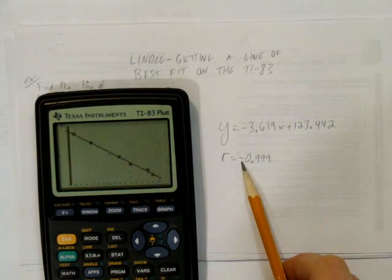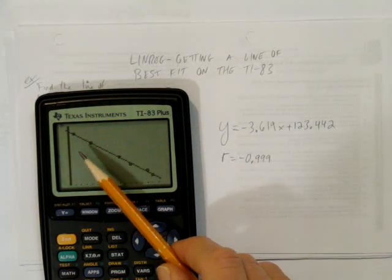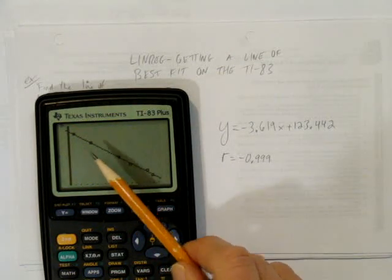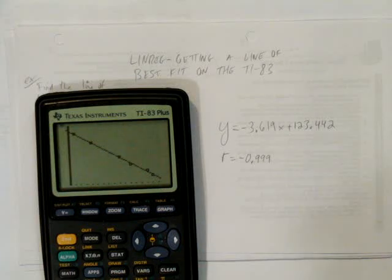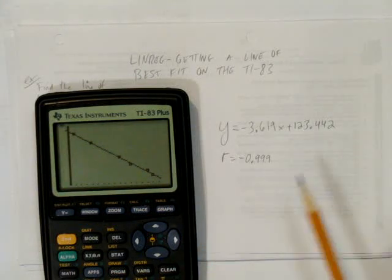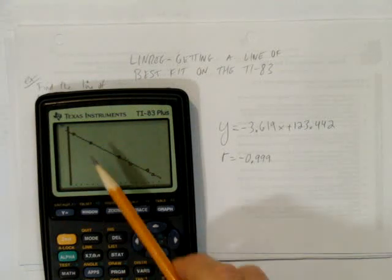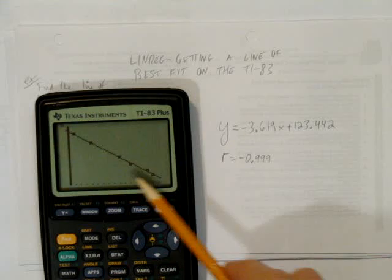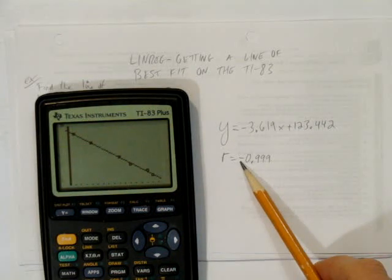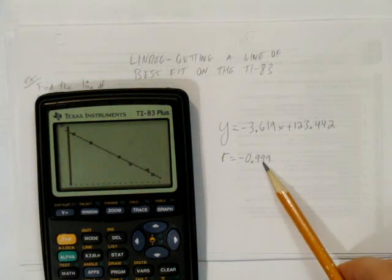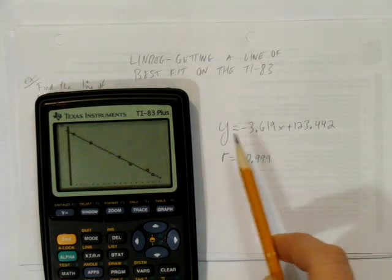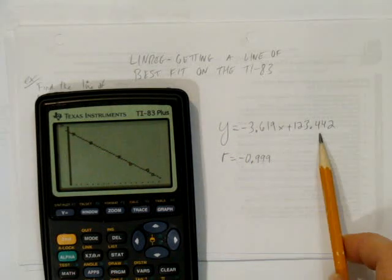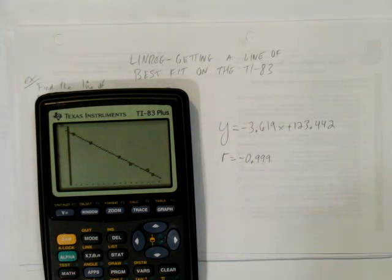Finally, this negative in front of the r tells us that this line represents a relationship that's going down. So what do we have here? A relationship or a correlation that is both negative — going down — and very strong, very close to 1.0, very close to a line. And here's that equation of that line of best fit.